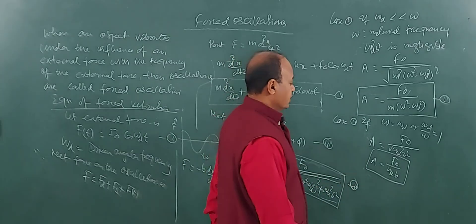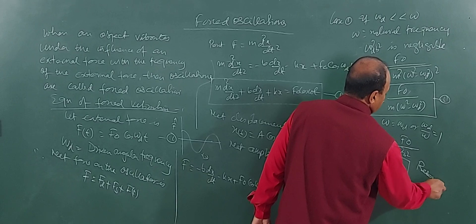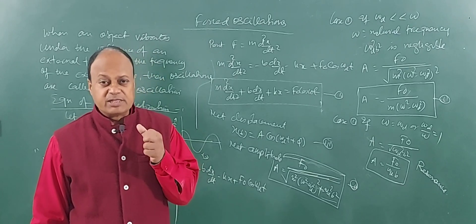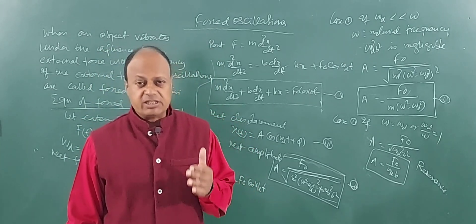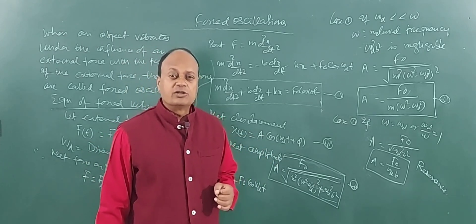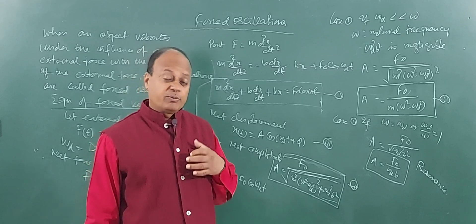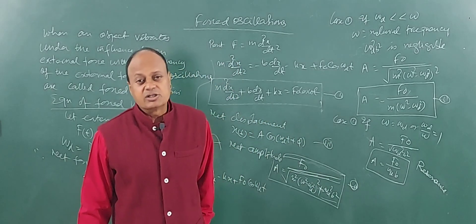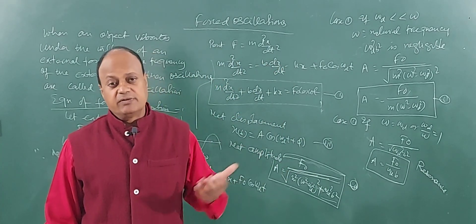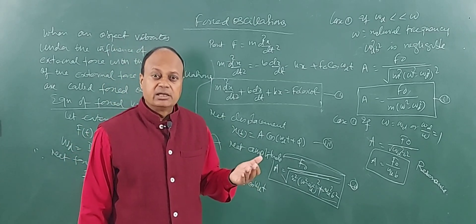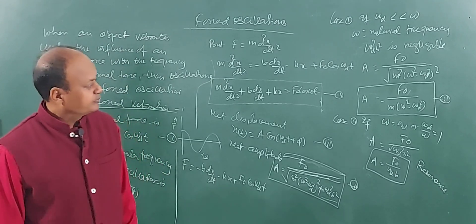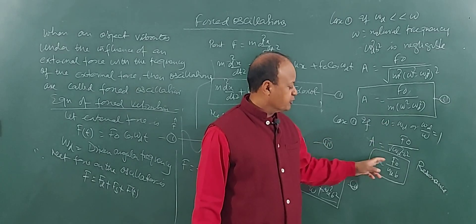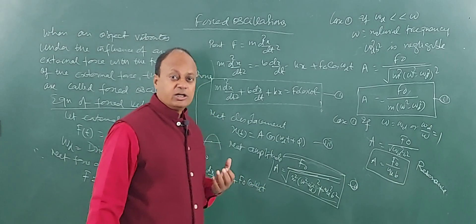When the amplitude becomes very large, this situation is called resonance. Resonance is a special case of forced vibrations in which the frequency of the external source is equal to the natural frequency of the oscillator. In resonance, the amplitude of vibration becomes very large, the energy becomes very large, it is more audible, and it can be heard over long distances.